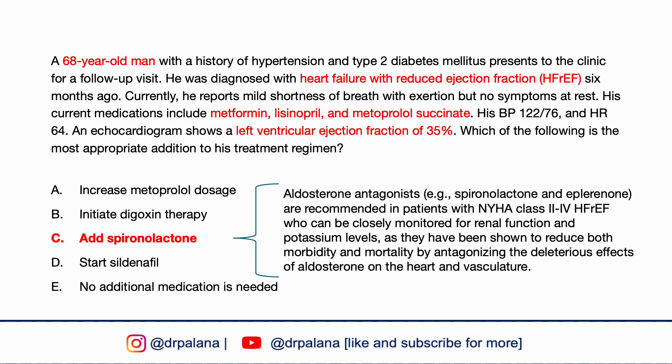The management of HFrEF involves medications shown to reduce mortality and morbidity. This patient is already on an ACE inhibitor and a beta blocker. Given his stable blood pressure and heart rate, as well as continued symptoms, the addition of aldosterone antagonists such as spironolactone is appropriate. Aldosterone antagonists like spironolactone and eplerenone are recommended in patients with NYHA class 2 to 4 HFrEF who can be closely monitored for renal function and potassium levels.